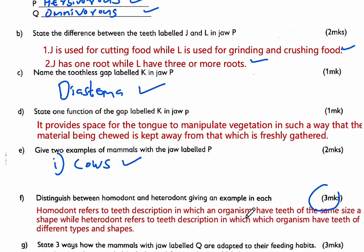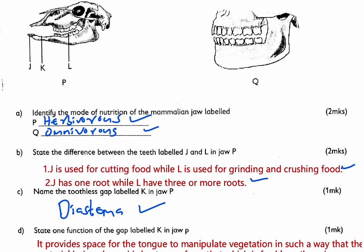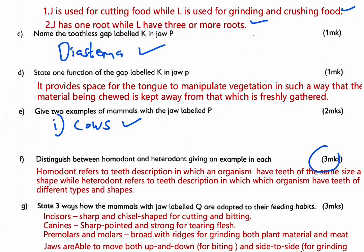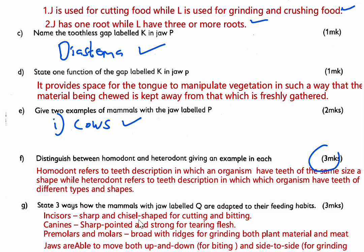Part G asks: state three ways how the mammal with the jaw labeled Q is adapted to its feeding habits. Jaw Q is for omnivores. First, they have incisors that are sharp and chisel-shaped for cutting and biting. Second, canines are pointed and strong for tearing flesh. Third, molars are broad with ridges for grinding both plant material and meat. Also, their jaws are able to move both up and down for biting and side to side for grinding. We score those three marks.